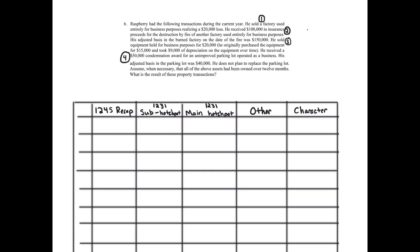The next step is characterization. Remember, the character column — once you finish that last column, you finish the problem. At number one, he sold a factory used entirely for business purposes, realizing a $20,000 loss. We determine if it's a capital gain or capital loss under the general rules. You need a capital asset and a sale or exchange. Do we have a capital asset? No — it's number three on our list. It's real property used in business, and real property used in business is never a capital asset.